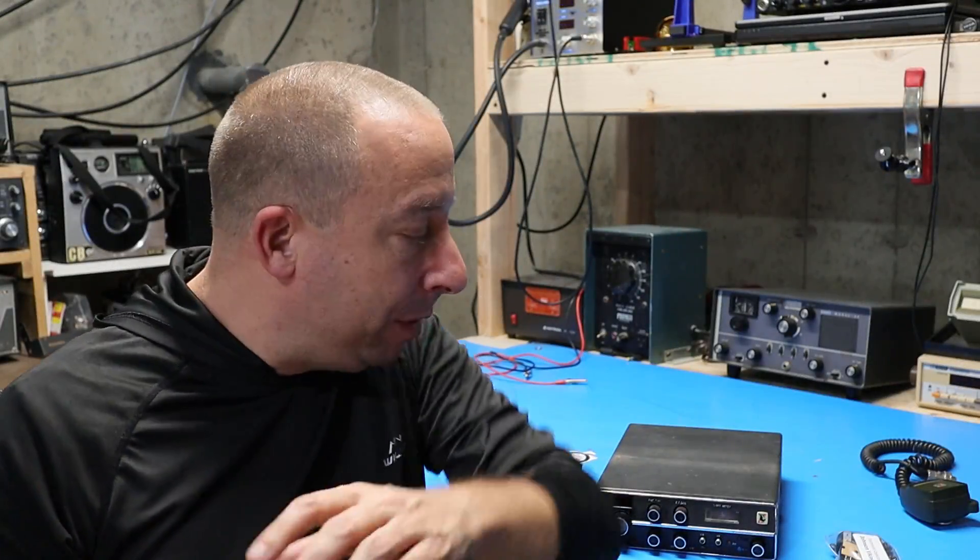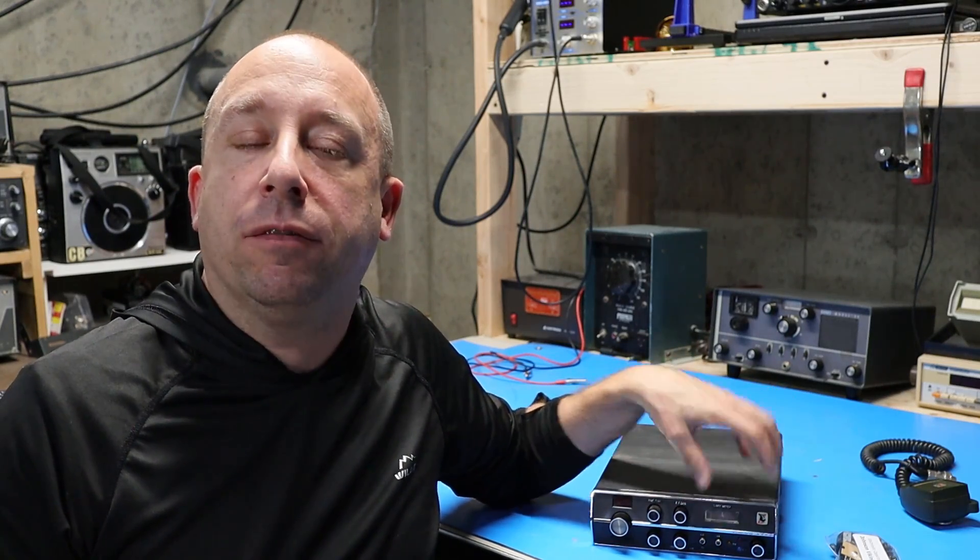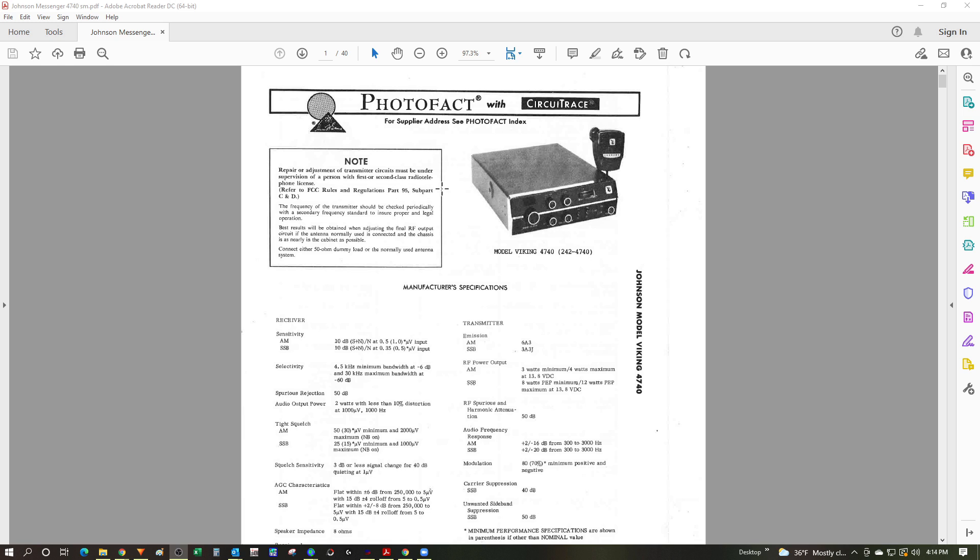Hello and welcome to the 741 channel. Today I'm going to be replacing the electrolytic capacitors on this Johnson Viking 4740 CB radio. I did find a Sam's photo fact for this radio. I'll leave a link in the description in case you want to download it.